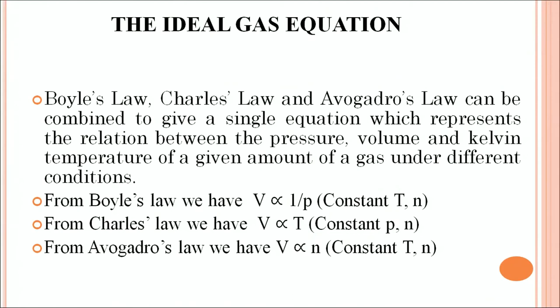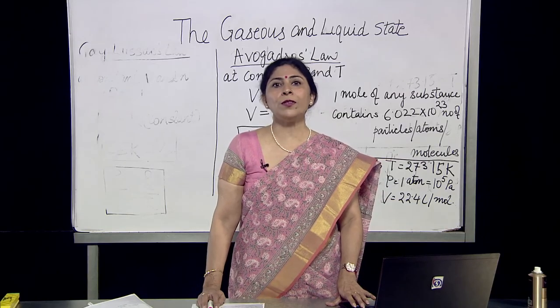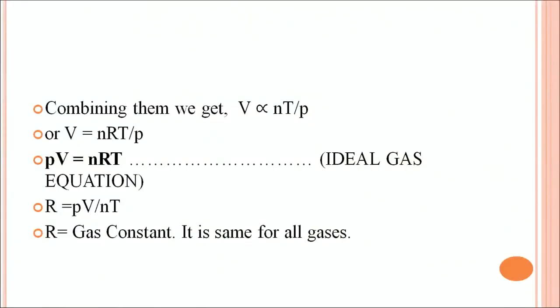Boyle's law, Charles' law, and Avogadro's law can be combined to give a single equation representing the relation between pressure, volume, and Kelvin temperature. Boyle's law gives V ∝ 1/P; Charles' law gives V ∝ T; Avogadro's law gives V ∝ n. Combining all three: V ∝ nT/P, or V = nRT/P, which gives the ideal gas equation PV = nRT, where R is the universal gas constant, the same for all gases.